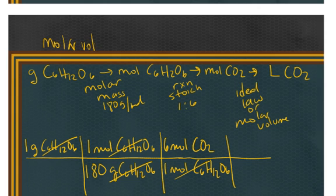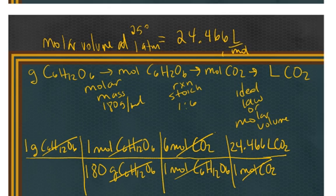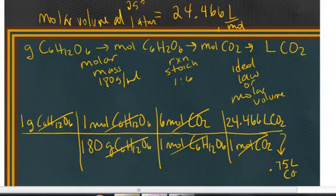Whereas, regular STP is 22.4, under these conditions, the molar volume is 24.46 liters per mole. Since that is a well known quantity, I can put that in right here and say for every one mole of carbon dioxide at 25 degrees Celsius and one atmosphere, the molar volume is 24.466 liters of carbon dioxide. So, in that way, I can very easily calculate the volume of this number of moles of carbon dioxide is going to be 0.75 liters of carbon dioxide.